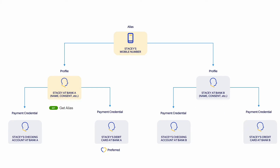Now let's move on to the get alias, get all payment credentials, and get payment credential APIs to see how we can manage and search for alias profiles within the directory. Once the alias and respective profiles have been created for each financial institution, participants can utilize the get APIs to obtain information about the links in the alias directory. The get alias API, for instance, allows a participant to retrieve available details about a specific alias, such as identification, profile information or consent. For example, bank A might wish to verify the timestamp of the consent that Stacey provided to ensure that it's still within the valid time period according to local data management regulations.